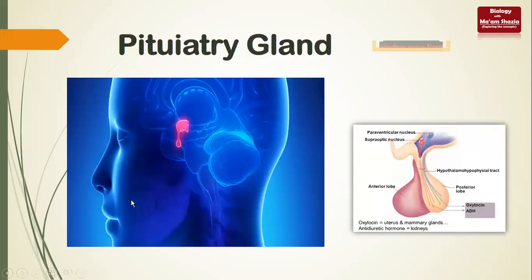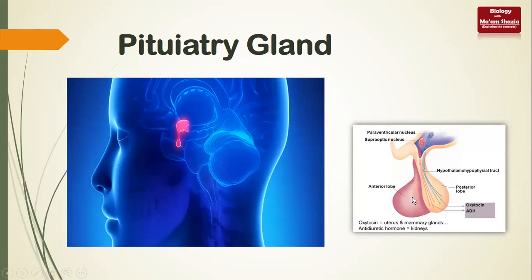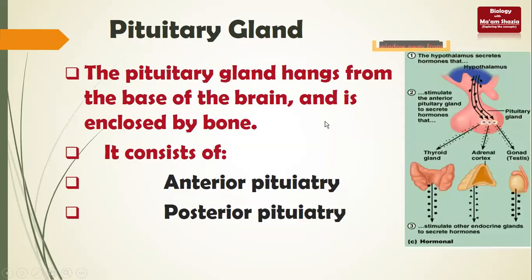This is the pituitary gland next to the hypothalamus - that pink-colored structure is the pituitary gland. It has three lobes, but two are discussed in our book: the anterior pituitary and the posterior pituitary. In this lecture, we will discuss the anterior lobe only. The posterior lobe will be discussed in the next lecture.